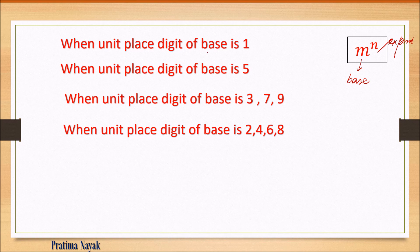The four categories are: one, when the unit digit of the base is 1; two, when the unit digit is 5; three, when the unit digit is 3, 7, or 9 — these are similar and we'll make a method for them; and four, when the unit digit is 2, 4, 6, or 8. Please keep these noted.